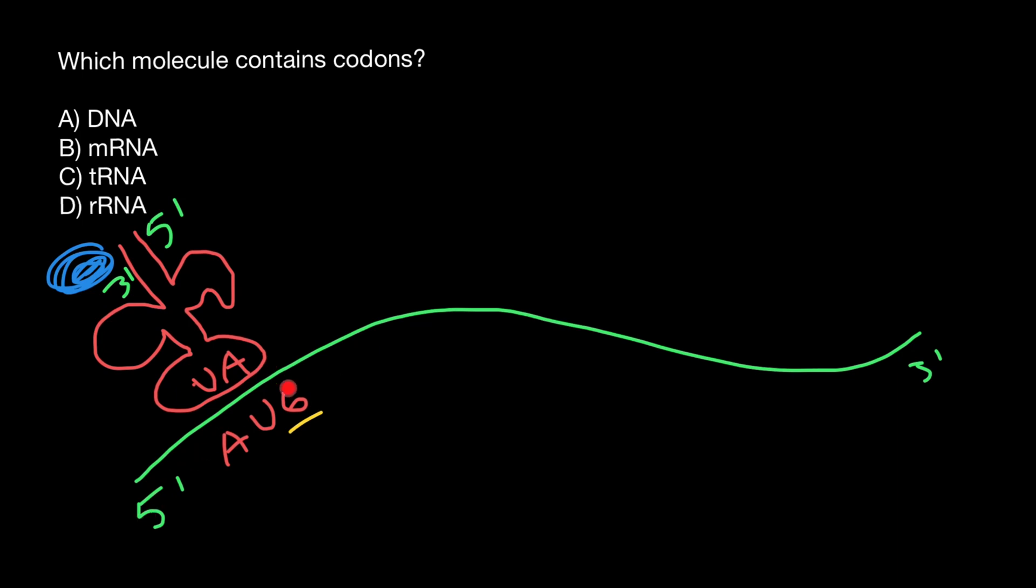So if messenger RNA third position is wobble position, in tRNA, first position is going to be wobble position. But let me still put cytosine here in order not to confuse you that we only have two nucleotides in anticodon. Actually it's three, but the first one can be in most cases any.